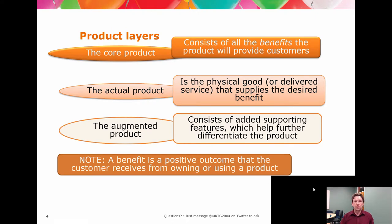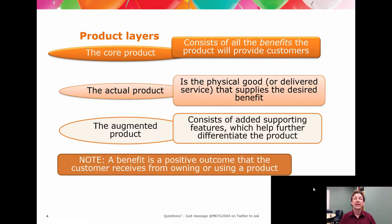Within product, back in chapter one we talked about the multilayer concept — the core, the actual, and the augmented. The core product is an area where students have traditionally had some difficulty trying to identify what the customer is actually seeking. When you're looking at a core product, you're looking at benefits.